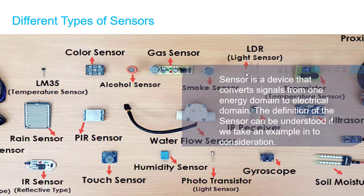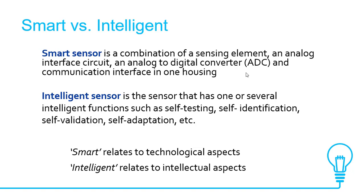You can see here different types of sensors. As we said, a sensor is a device that converts signals from one energy domain to another — usually the electrical domain. Examples include LDR light sensor, water flow sensor, humidity sensor, PAR sensor, and temperature sensor. There are also two important types of sensor: smart and intelligent sensor.